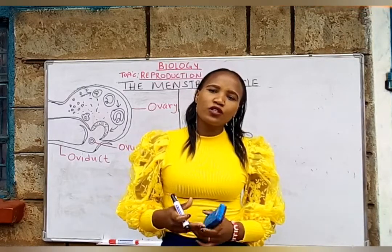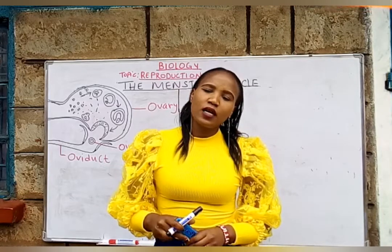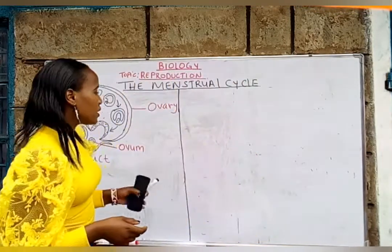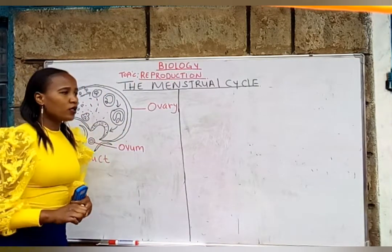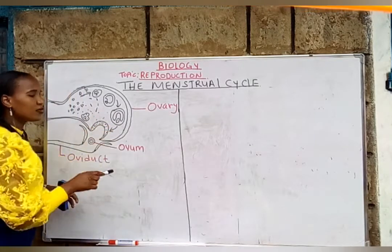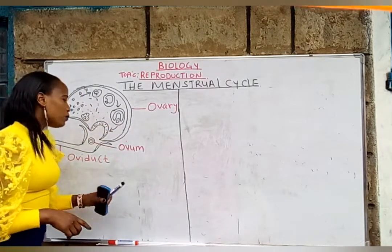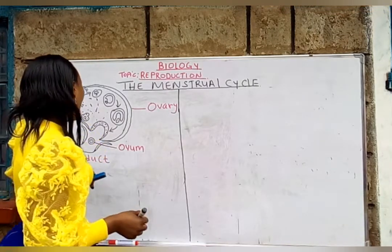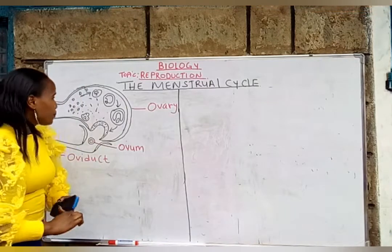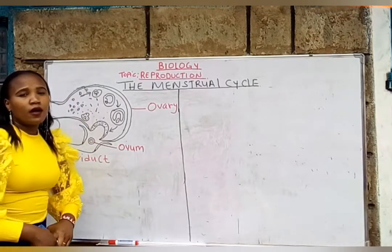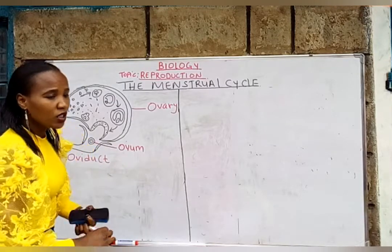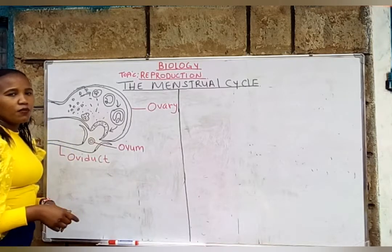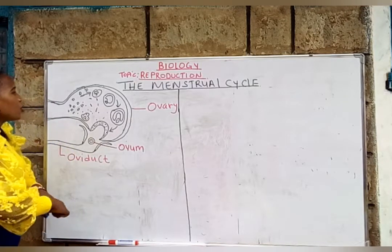But before we look at the hormones, we want first of all to understand the development of an ovum. With the help of this diagram, we are going to try to understand how the ovum develops to the point where it is released to the oviduct. During the birth of a female child, there are about 70,000 eggs, but only a few of them reach development.